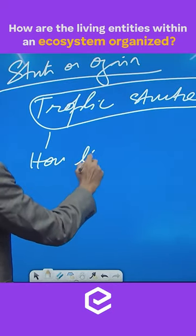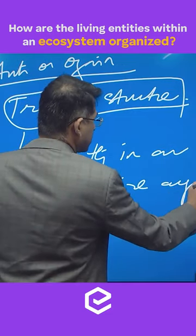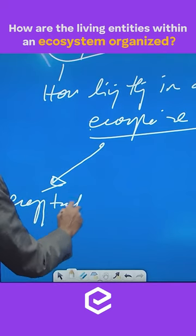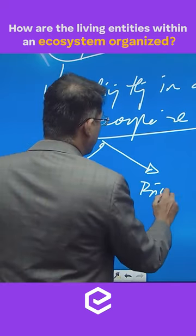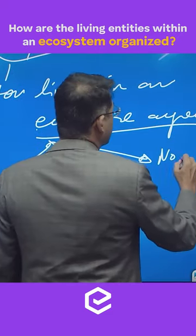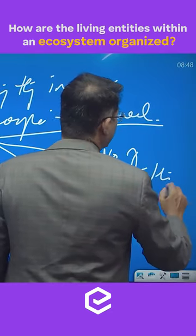How the living things in an ecosystem are arranged. It is in terms of how the energy transfer happens, arrangement in terms of biomass. There is another way in terms of the number of the organisms or number of the living things.